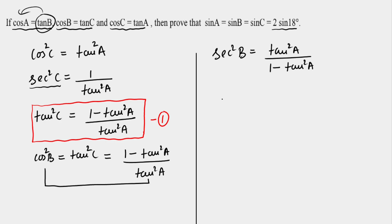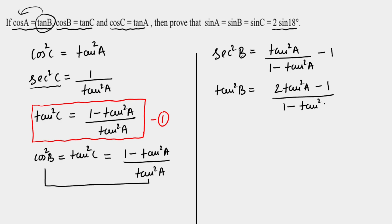Opening sec²B as 1 + tan²B and subtracting 1, we get tan²B = (2tan²A - 1) / (1 - tan²A). This is our second relation — tan B expressed in terms of tan A.